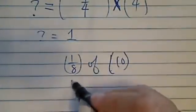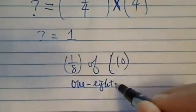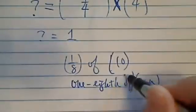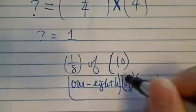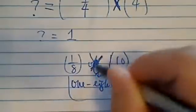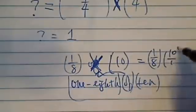So then we'll just say one-eighth of ten. The word of means multiply again. So we can do this as a multiplication. This becomes one-over-eighth times ten-over-one.